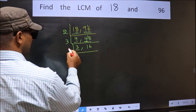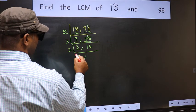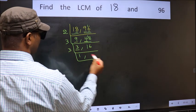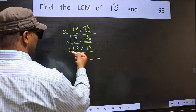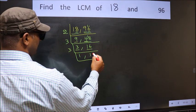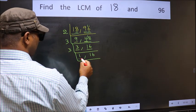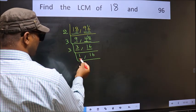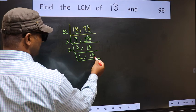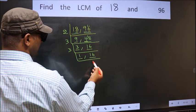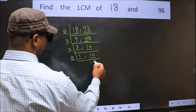Now we have 3 and 16. 3 is a prime number, so 3 divided by 3 is 1. The other number, 16, is not divisible by 3, so we write it down as it is.